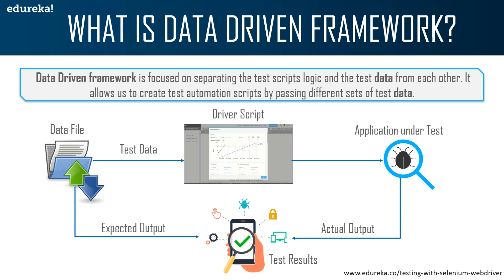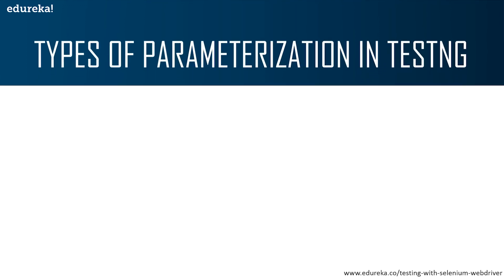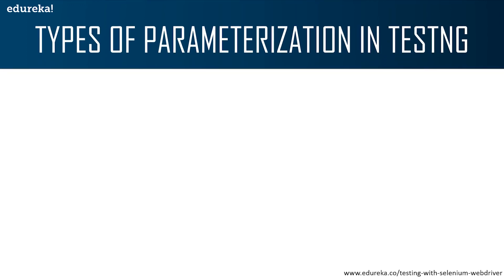The expected output will be defined first, and then we will check whether the actual output matches the expected output or not. In a data-driven test automation framework, input data can be stored in a single or multiple data sources like XLS, XML, CSV, and databases. Now let's move further and understand the types of parameterization in TestNG.